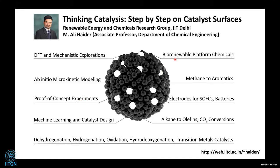In experiments we look at biorenewable platform chemicals development. We have an effort going on methane-to-aromatics development. For a long time we have been working on developing electrode materials for solid oxide fuel cells, and recently we also started working on batteries. Other catalysis areas include alkane-to-olefins and CO₂ conversion. Different types of reactions include dehydrogenation, hydrogenation, oxidation, and hydrodeoxygenation, with a specific focus on transition metal catalysts and how you make alloys with them.